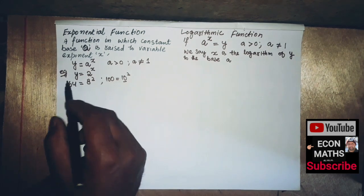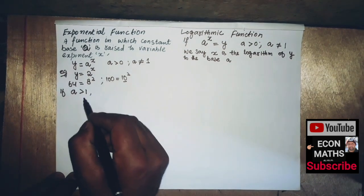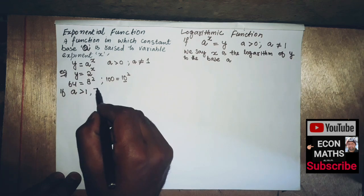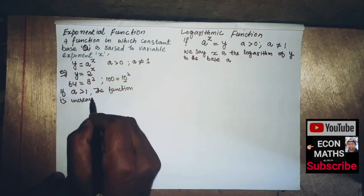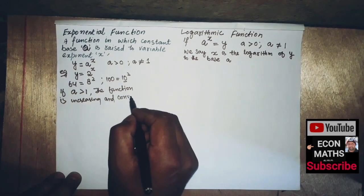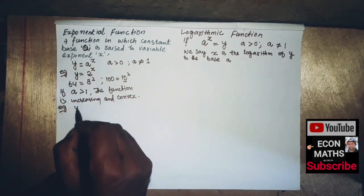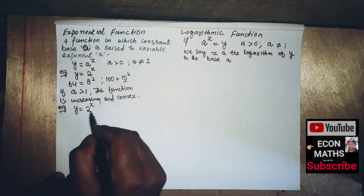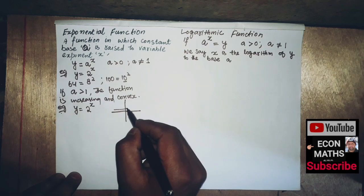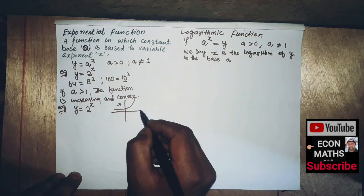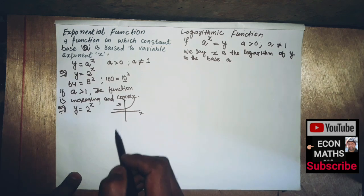If the value of a is greater than 1, then the function is increasing and convex when plotted on a graph. For example, y is equal to 2 to the power x, where 2 is greater than 1, so this function is increasing and convex. If we plot the values of x we get different values of y showing this shape.